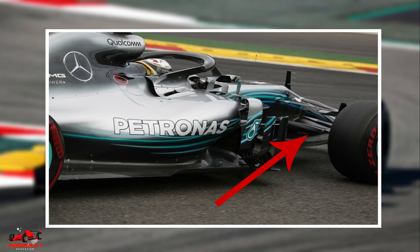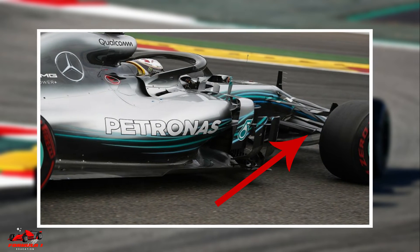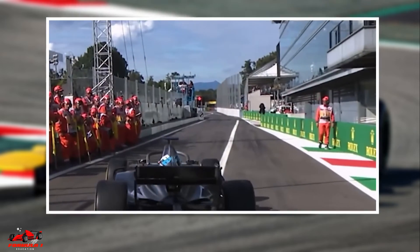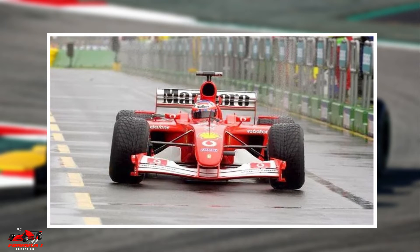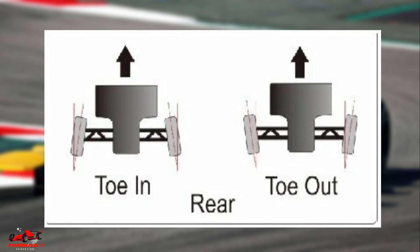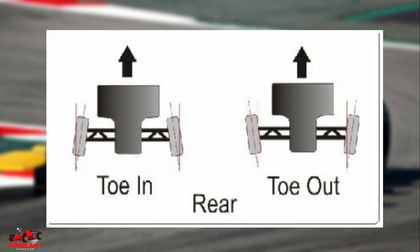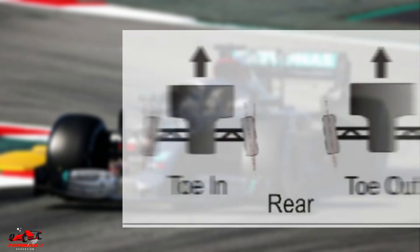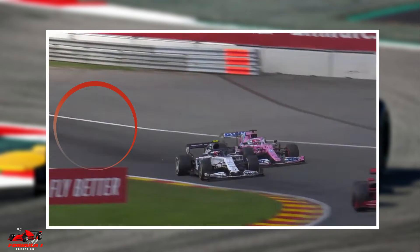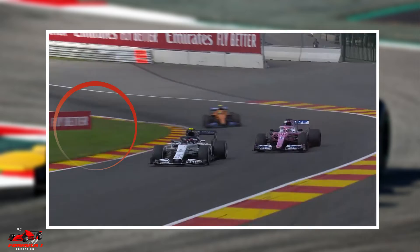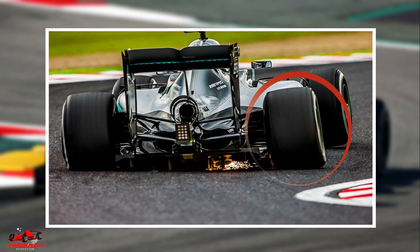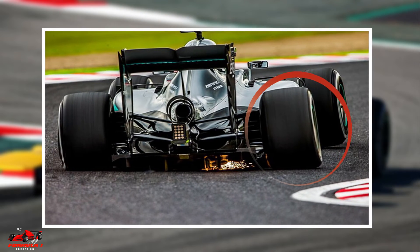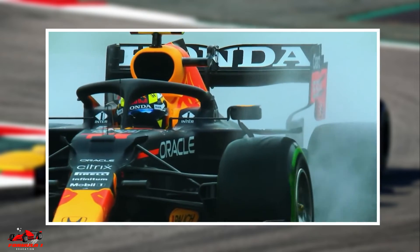While negative toe allows for better cornering, it comes with the downside of less stability while driving in a straight line — the tires are pointed slightly outward. To compensate for this, the rear tires of a Formula 1 car are set up with a slightly positive toe. Since Formula 1 cars are rear wheel drive, this positive toe in the rear gives the car stability when coming out of the corners and while driving down the straight.